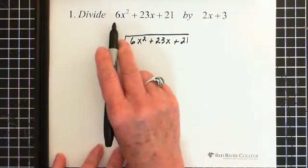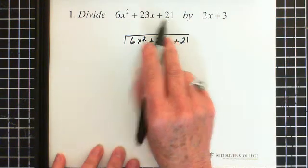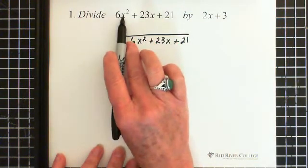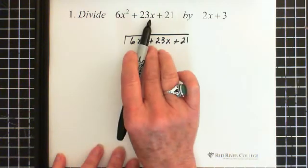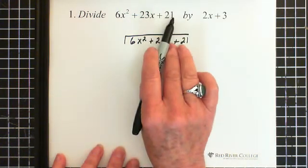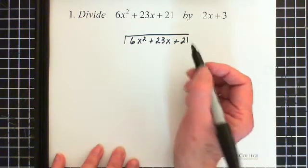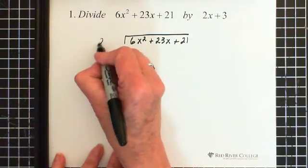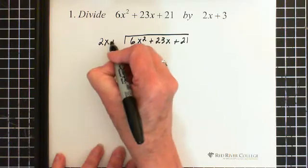And this one is in order of power. We need the 6x, or the x squared to be first, the x to be the next one, and then the constant to be last. And we're dividing by 2x plus 3.